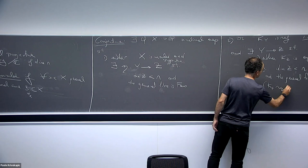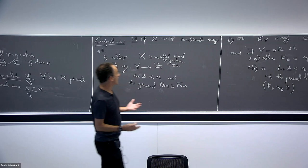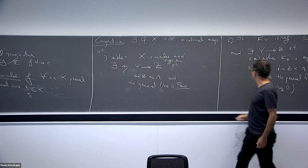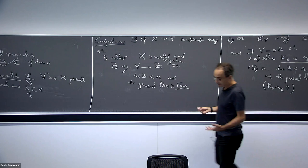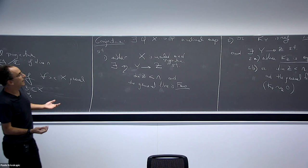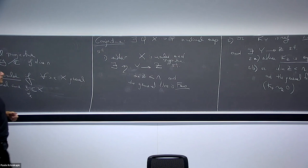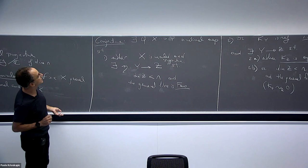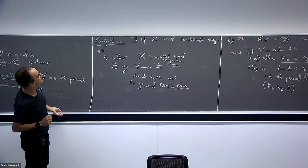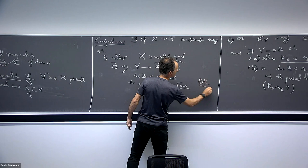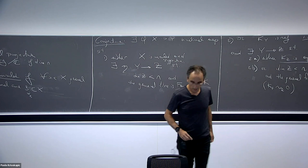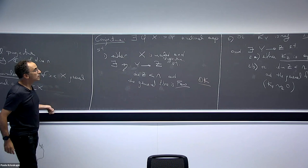The standard statement about MMP is that we expect three building blocks: Fano varieties, Calabi-Yau's, and canonically polarized varieties. If the conjecture is true we can decompose our variety after a birational map into these three pieces. Parts of this are already theorems; the open part is the remaining case.